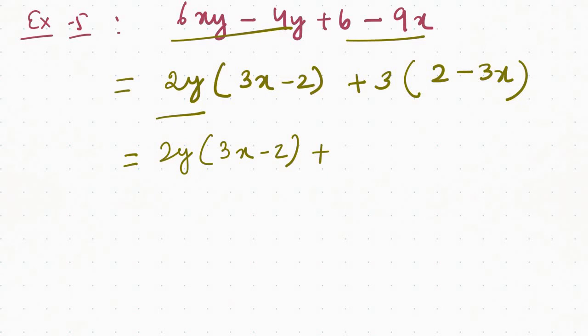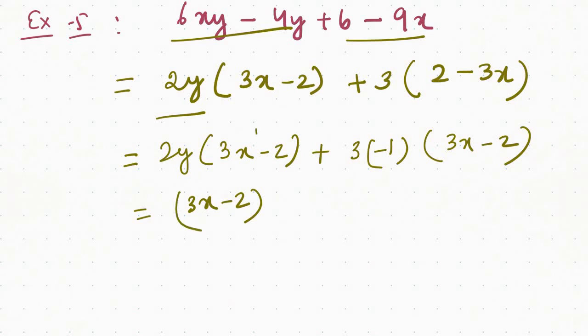So you can change your sign. When you change to minus 2, you can change 3. Then you change 3x to minus 2. Now you have 4y plus 6x. When you change the sign to minus 1, you have 3x minus 2. So you use 3x minus 2. Then you need 2y minus 3.